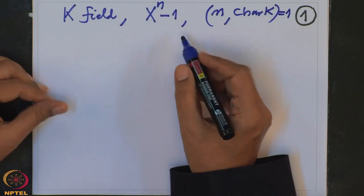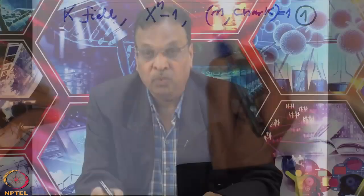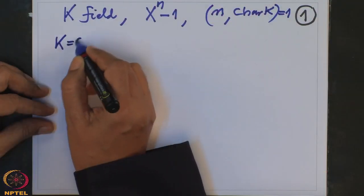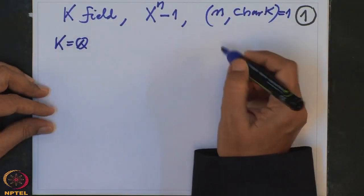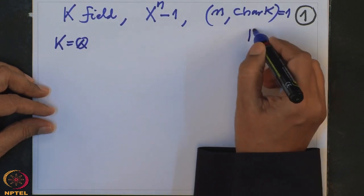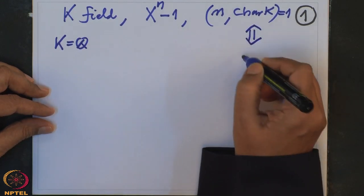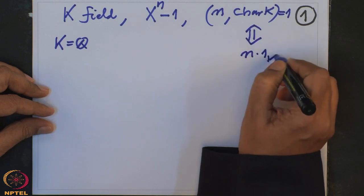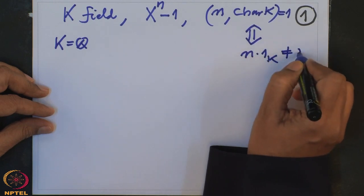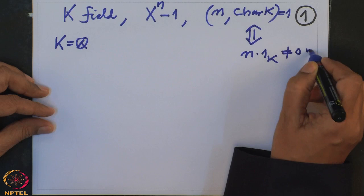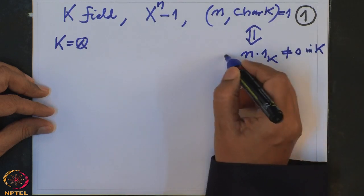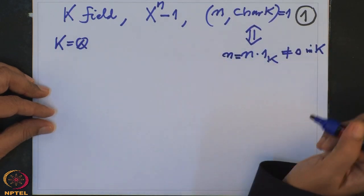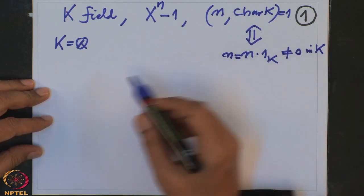In characteristic 0 this is always true. So if K were ℚ, there is no condition. This condition is equivalent to saying that n·1 is not 0 in K. This is automatic in a characteristic 0 field — no integer can be 0 in a characteristic 0 field.